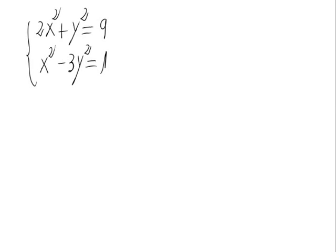Let's solve the system of equations we see on the screen. We can see that both the x's and the y's in both equations are squared, so this is a system of second-degree equations. We could make a change of variable to avoid the squares, but we're going to solve it directly with no changes at all.